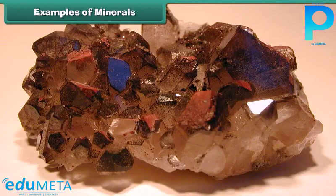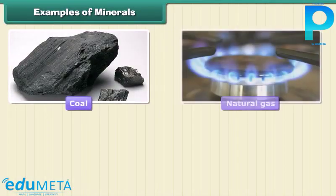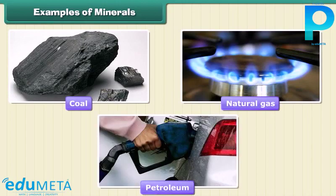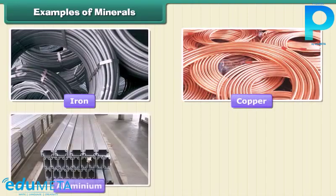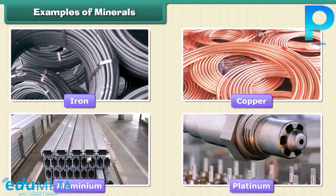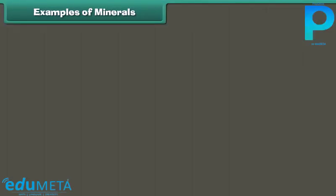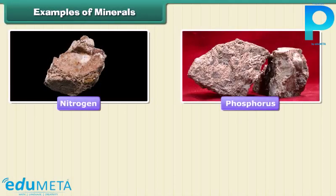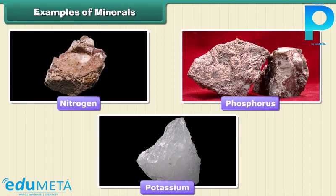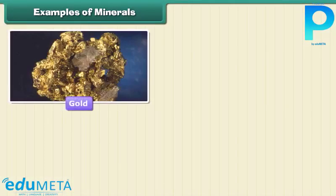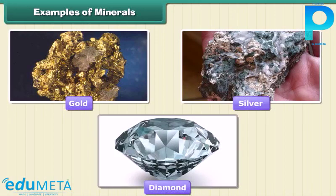Examples of minerals: Minerals are very important to humankind. Some minerals are used as fuels, for example coal, natural gas, and petroleum. Some are used in industries, like iron, copper, aluminium, platinum, etc. Minerals like gold and lithium are used in medicines. Nitrogen, phosphorus, and potassium are used in fertilizers. Gold, silver, and diamond are used in jewelry.